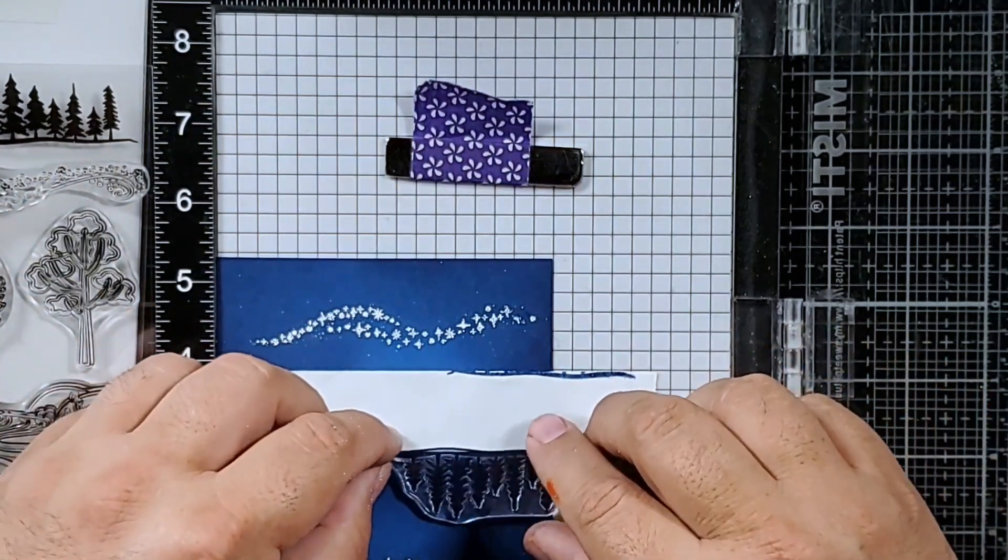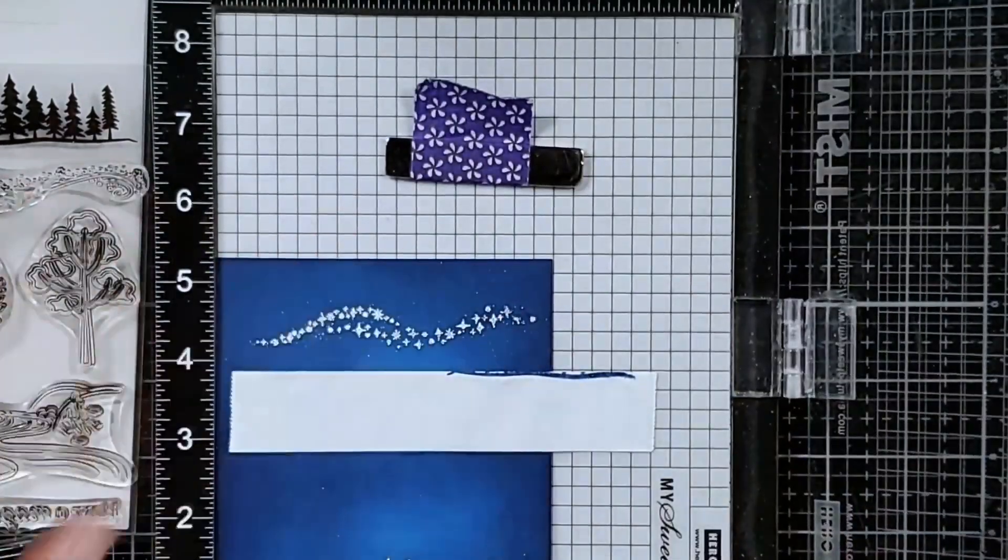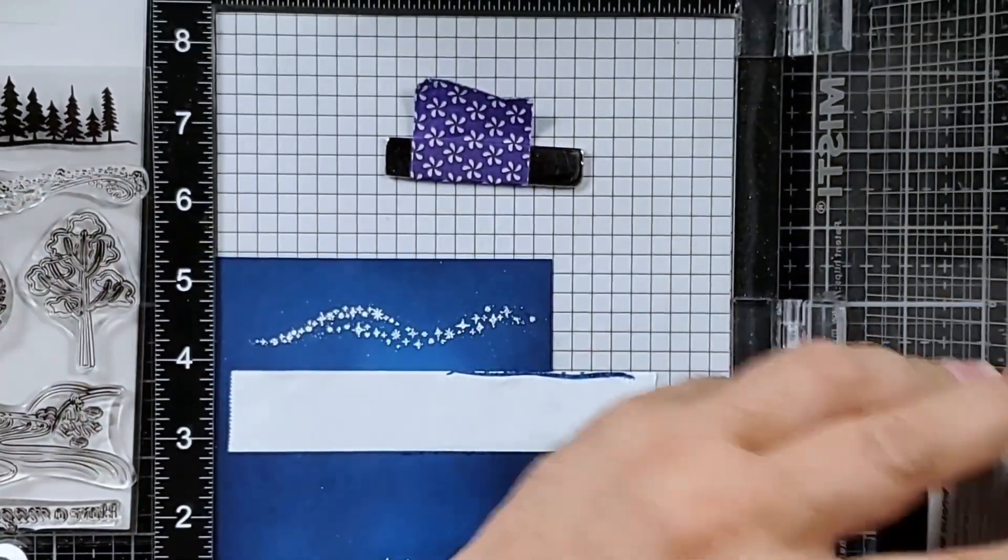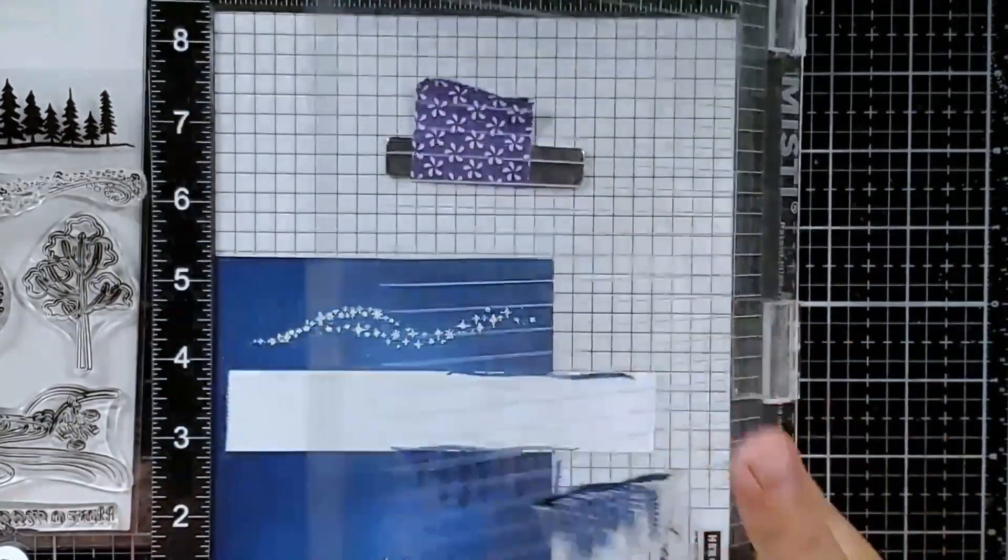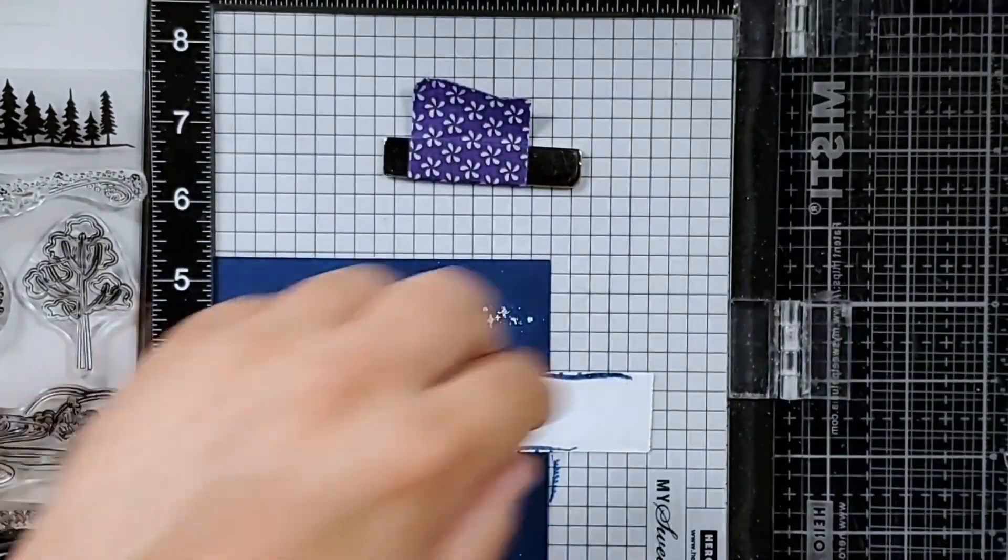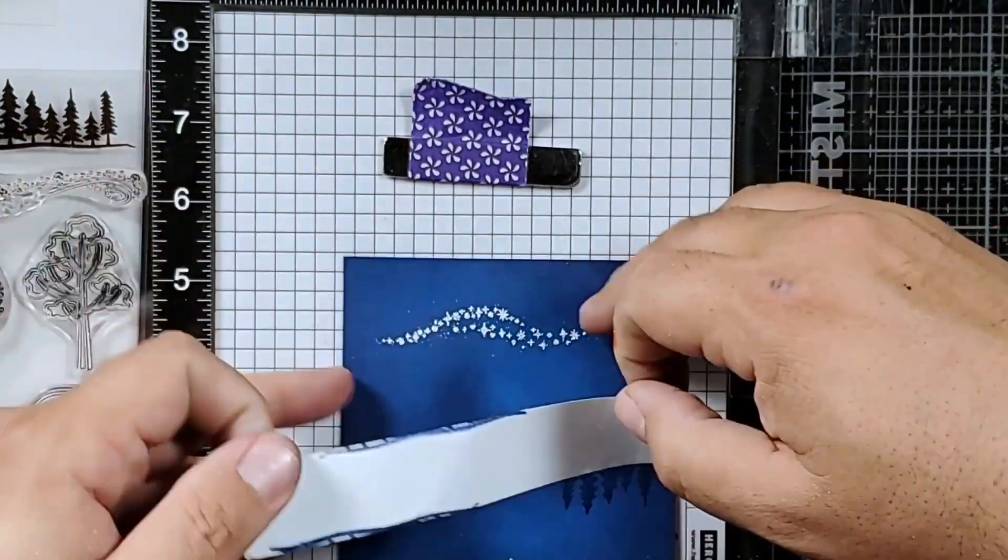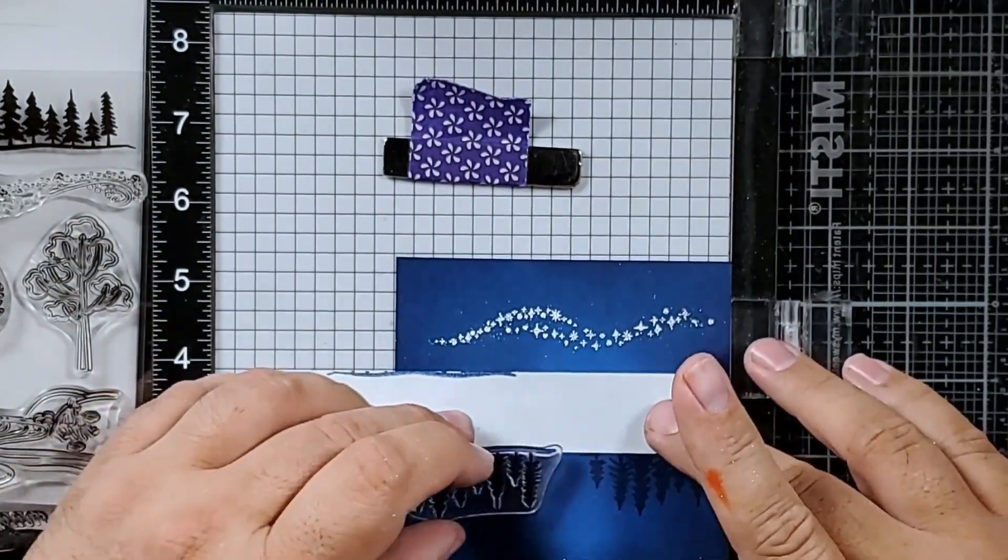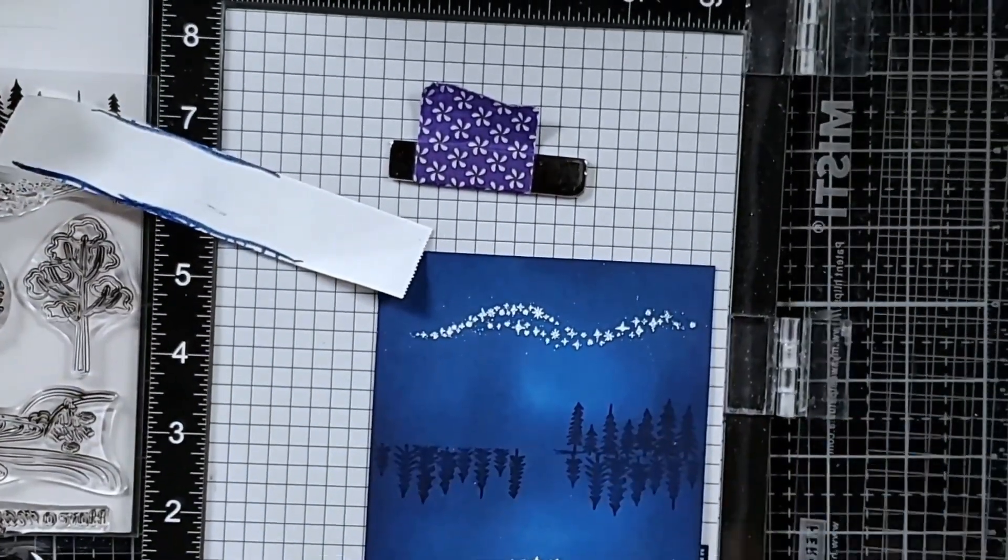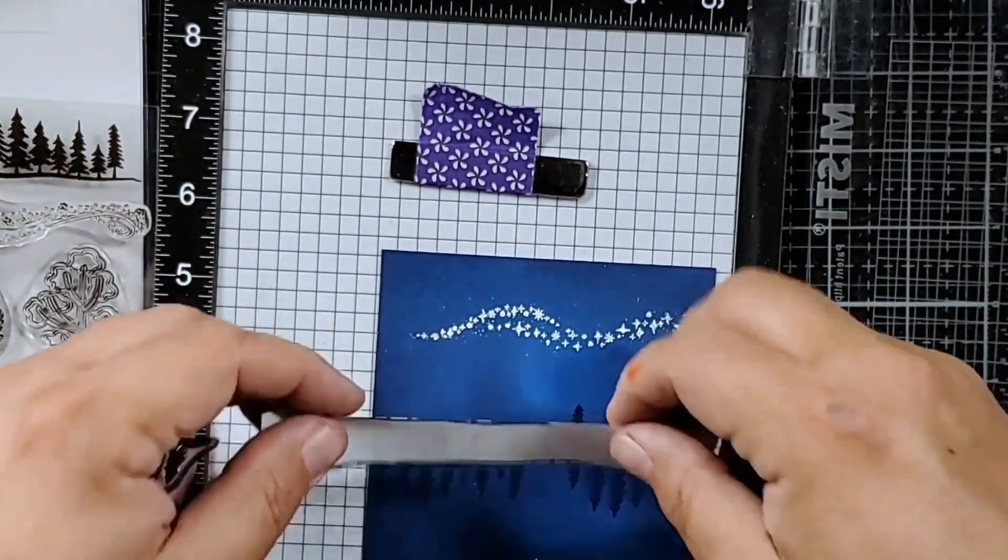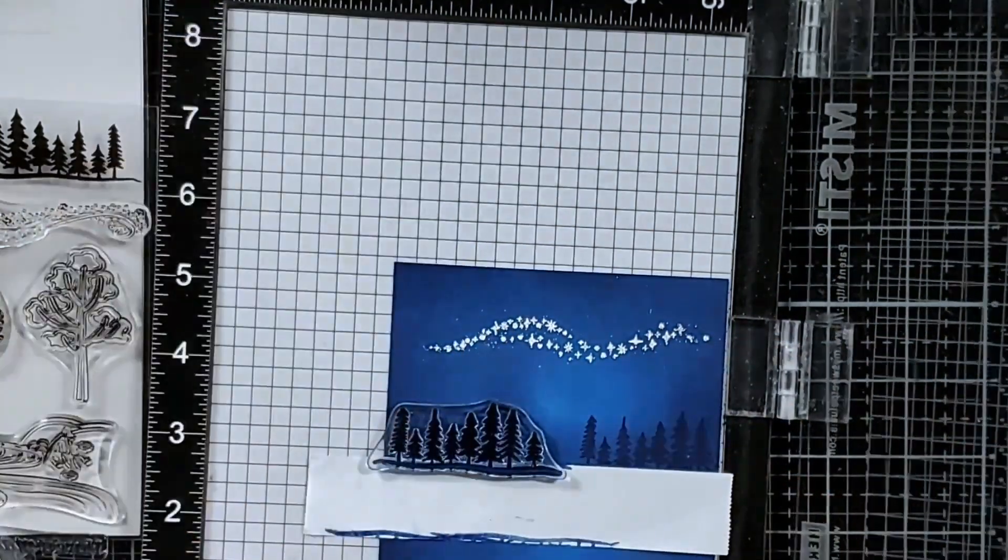So I'm just gonna flip the stamp over, ink it up with some navy ink, and I'm only going to stamp it one time because I want the reflection to be just a little lighter than the actual trees in the lakeside. Then I'm going to repeat the process on the other side of my card panel, again stamping the bottom only once and then flipping it over and stamping the top a few times to make it a little darker than the bottom one. And that's it, isn't it beautiful? I just love it.